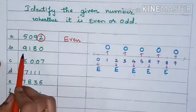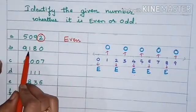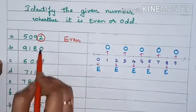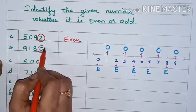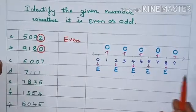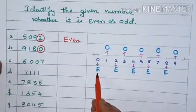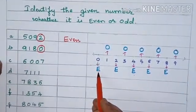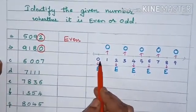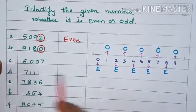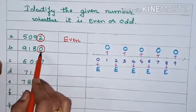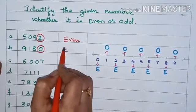The next one: 9,180. So the last digit is 0. You can see here 0 means this is an even number, because the number ends with 0. So 9,180 is an even number.